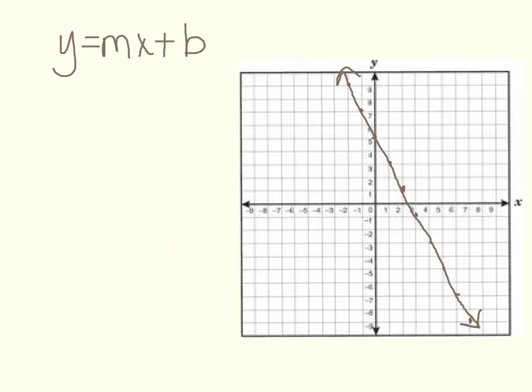Next, we're going to look at writing the equation for a line that has a negative slope. So first, let's go back to our y-intercept, which in this case is y equals 5. So we know that our y-intercept, or our b value, is 5.